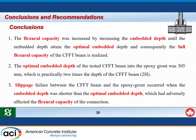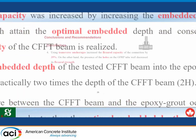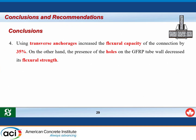Conclusions: Flexural capacity increases with embedment depth until the optimal embedment depth is reached, at which point the full flexural capacity of the CFFT beam is realized. The optimal embedment depth was 305 mm, practically two times the depth of the CFFT beam. Slippage failure occurred when the embedment depth was shorter than the optimal. Using transverse anchors increased flexural capacity by 35%, but the presence of holes in the GFRP tube decreased flexural strength.